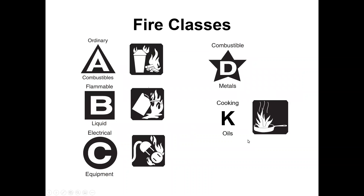There are basically three main classes of fire. Class A involves combustibles: paper, wood, clothing, carpeting, furniture. Class B is a combustible or flammable liquid — combustible liquids have a high flash point like motor oil, while flammable liquids like gasoline have a very low flash point. Class C is electrical, and we classify it differently because whatever you use to extinguish it must be non-conductive, otherwise you'll get shocked.